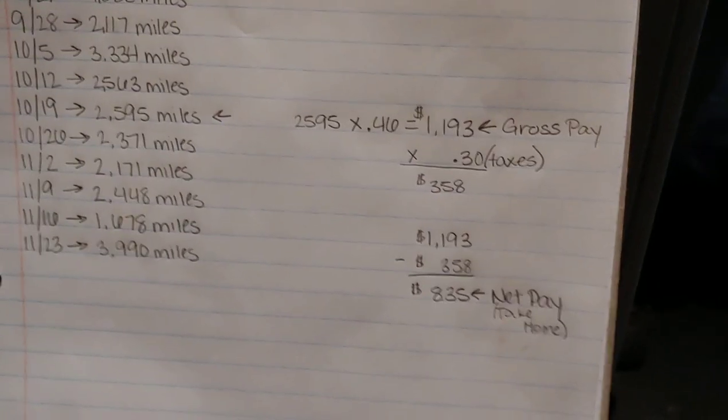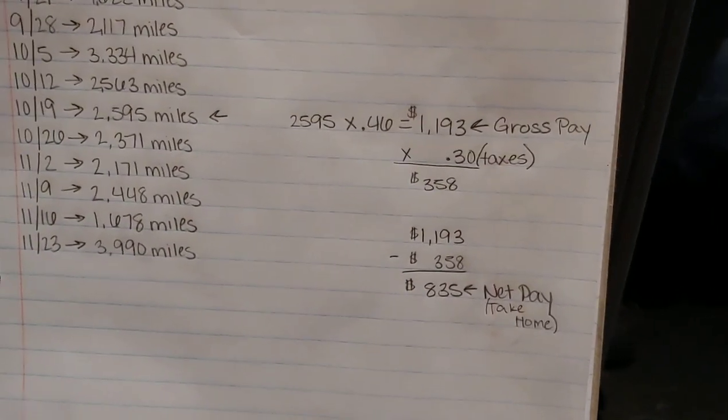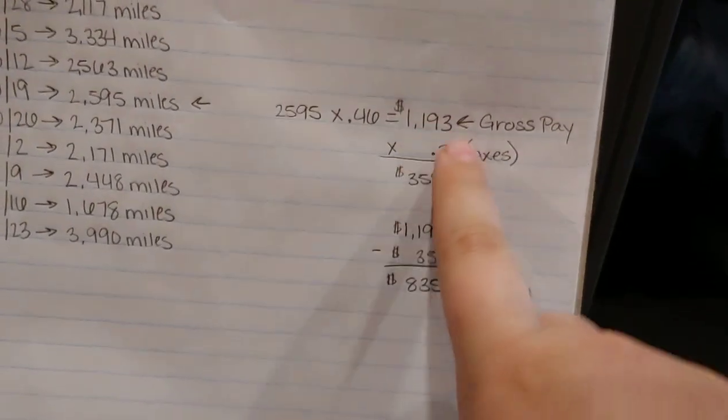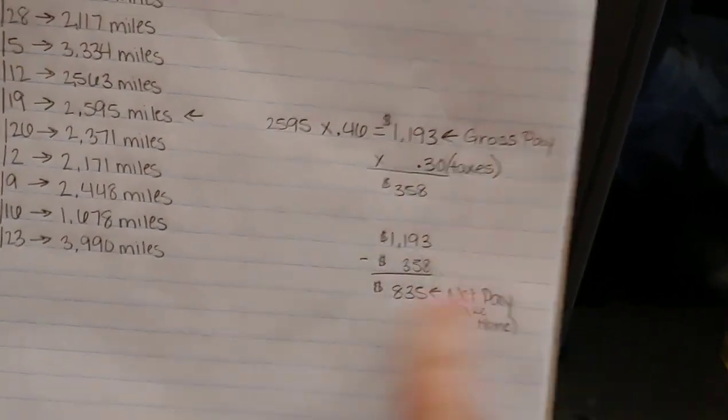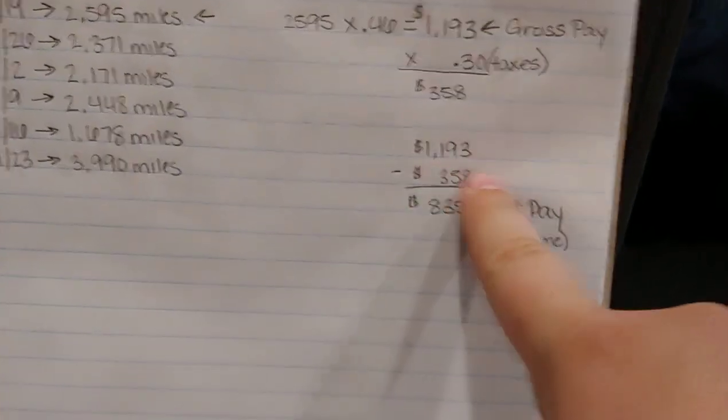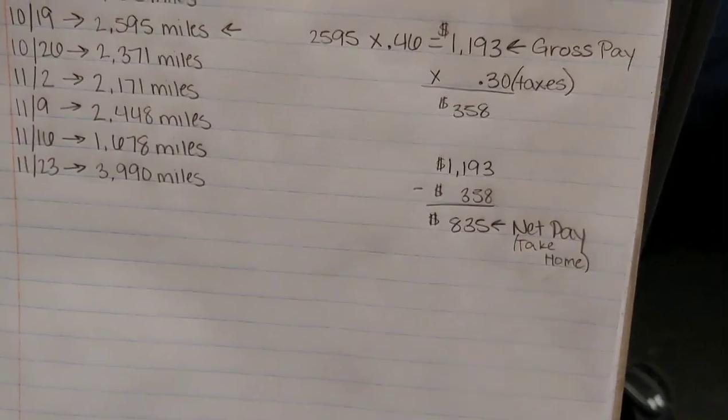anybody that wants insurance, they want to do the 401k thing, anything other than taxes being taken out, you're going to want to subtract that too right here. We just don't have anything like that. Just the rider pass.